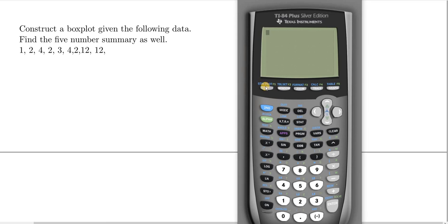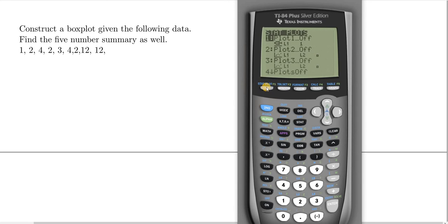Now we want to go to where it says STAT PLOT. STAT PLOT is a blue key, so again we have to press SECOND and then the STAT PLOT key, which is labeled Y= but we're really accessing the blue key. So press SECOND then STAT PLOT, and then just hit Enter one time.